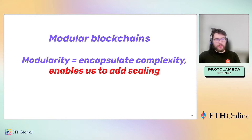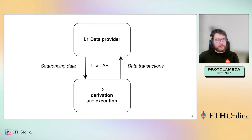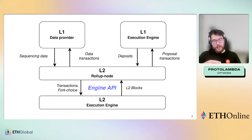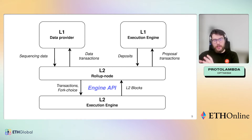If you think about modular blockchains, there's this narrative of taking apart the stack. You see this on layer one with the separation of consensus and execution in other blockchains. This enables us to encapsulate complexity and enable scaling. Abstractly, we have a data provider and a layer two for derivation and execution. More concretely, we have deposits - layer one messages that change layer two states - and then proposal transactions which you can think of as an oracle to state what the layer two state is and to enable withdrawals. So we have both data communication as well as communication for liveness and messaging across layers.